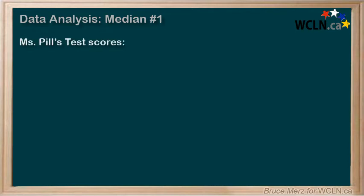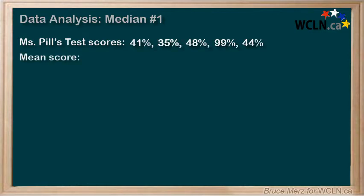Let's recall that example we gave of Ms. Pill's recent honors math test scores. When we calculated the mean, we got a mean test score of approximately 53%. We discussed how that one mark of 99% was skewing the mean to make it higher, and that's a problem. That 99% is called an outlier.